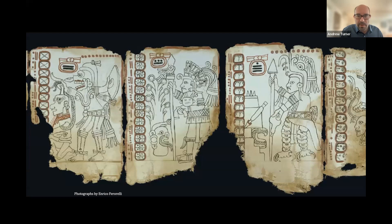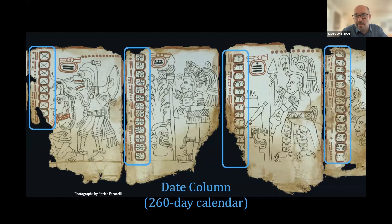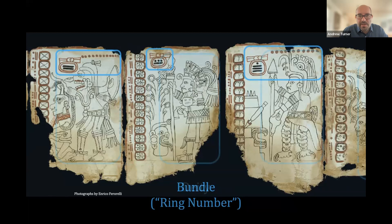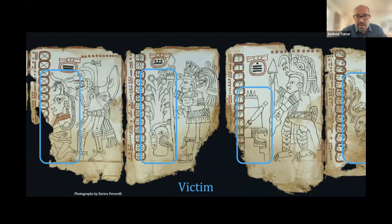The pages follow a formula that's pretty easy to break down. We don't know how many artists worked on these pages, but they follow a consistent scheme across all 10 surviving pages. On the left there's a column of dates — combinations of bars and dots with symbols within cartouches from the Mesoamerican 260-day calendar. There's a bundled ring number in the upper middle of each page. There's a deity dominating the right side of the page, always facing towards the left, usually confronting, restraining, attacking, or sacrificing a victim shown in the lower left.